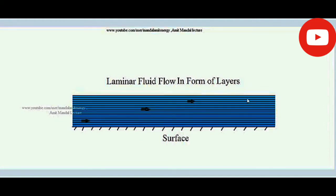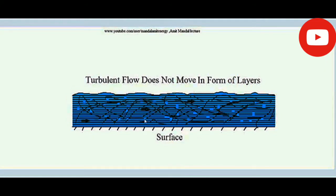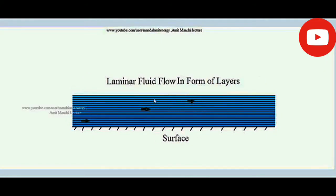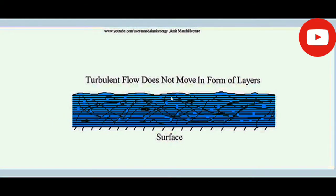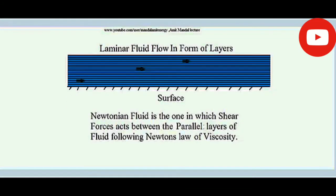Laminar flow generally occurs when the velocity of flow is smaller. In turbulent flow, when the velocity is very high, the layers don't move in a well-defined path — a zigzag fashion is observed. There is no well-defined path of movement, and such type of movement of fluid is called turbulent flow.